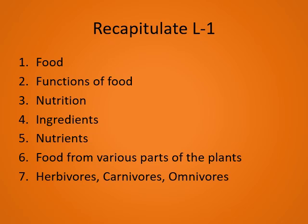We have also learned about food from various parts of the plant. We eat stem, roots, flowers, leaves, fruits, as well as seeds of plants. We also learned about herbivores, carnivores, and omnivores. Plant-eating animals are called herbivores. Flesh-eating animals are called carnivores. Omnivores are animals that eat both plants as well as the flesh of other animals.